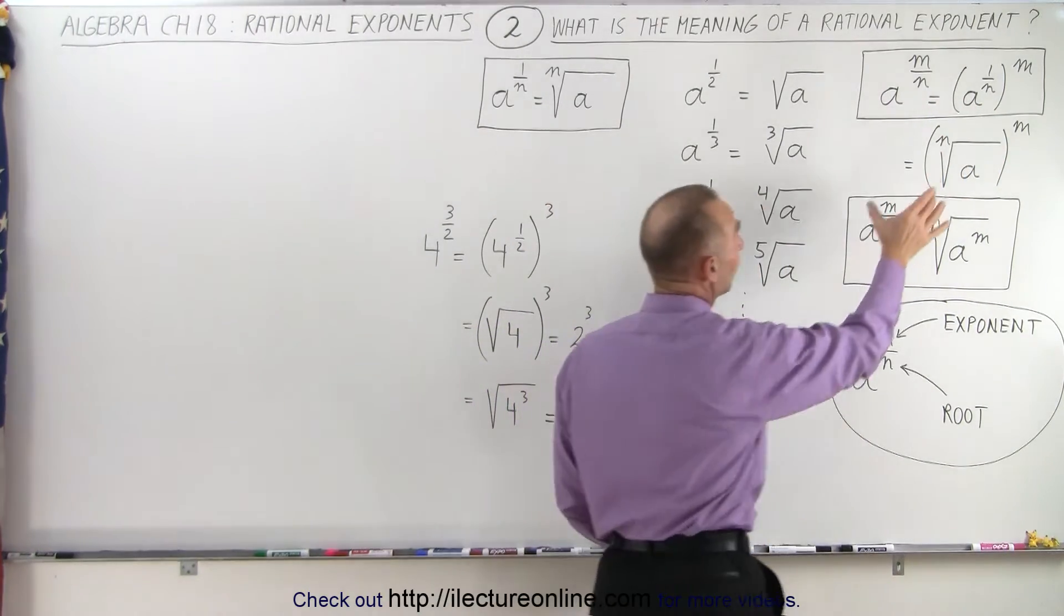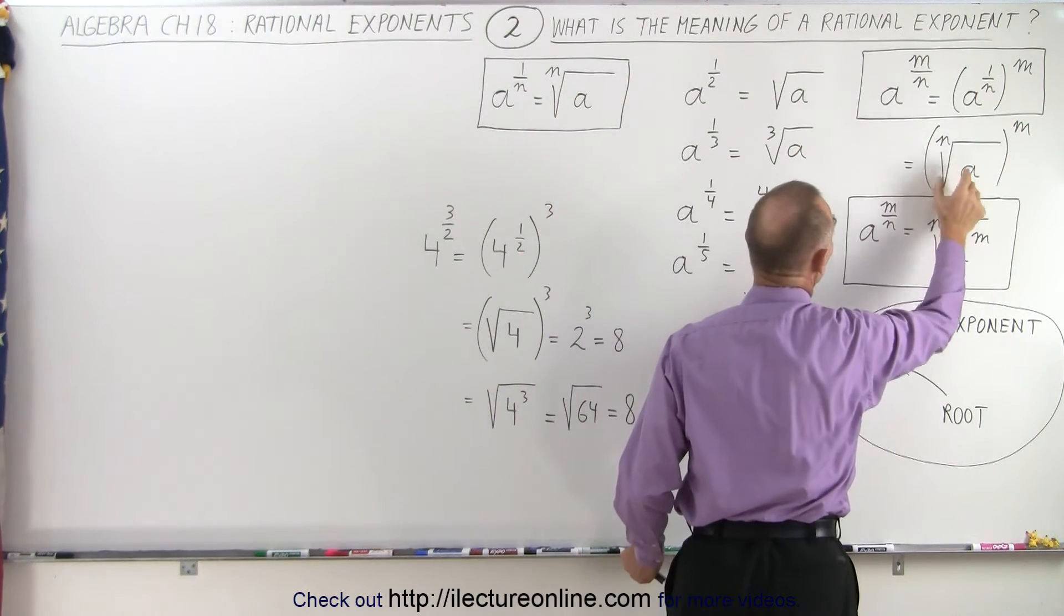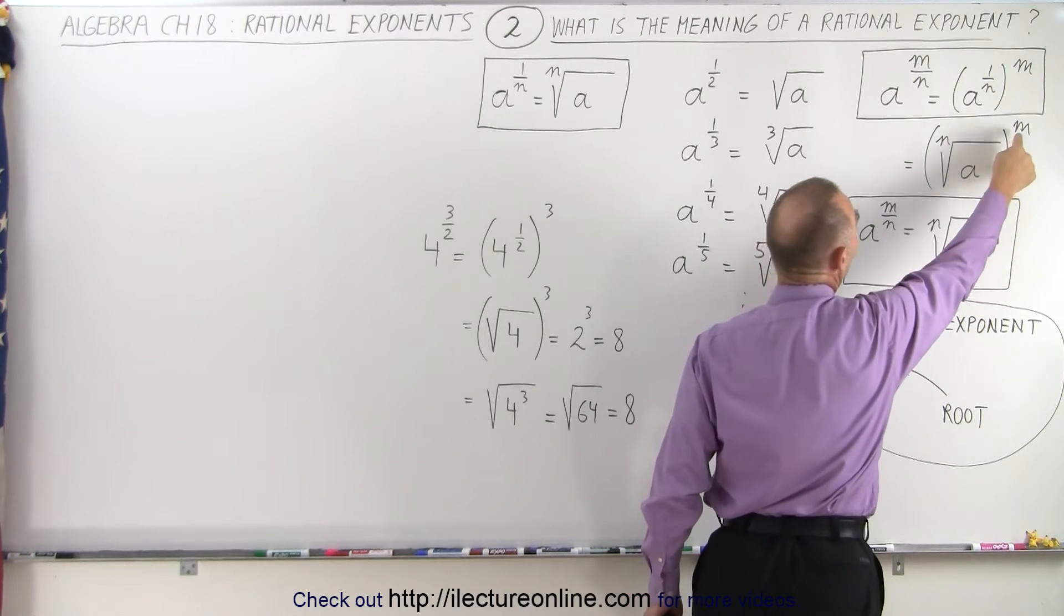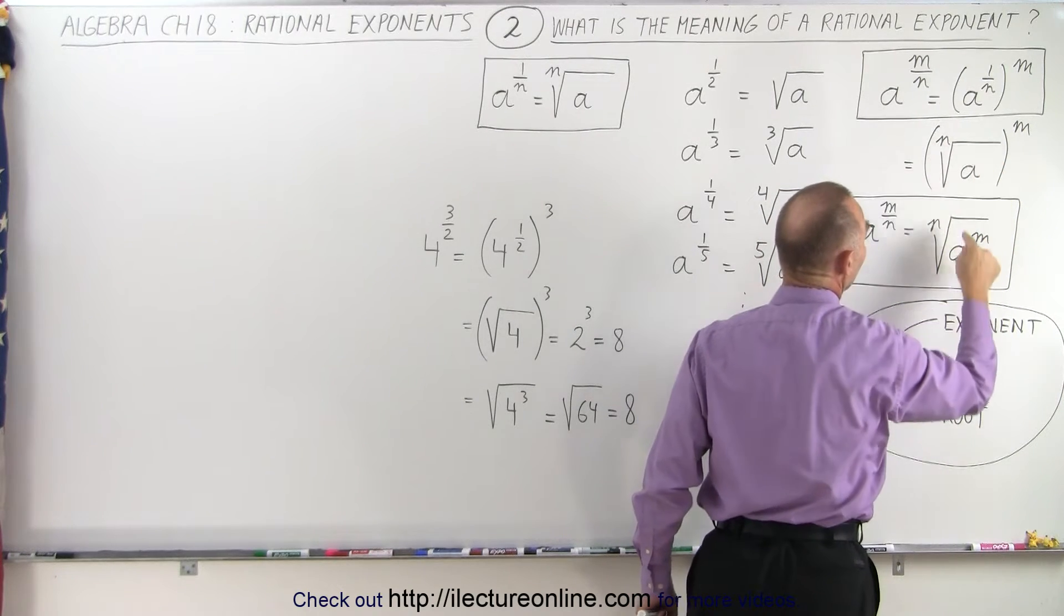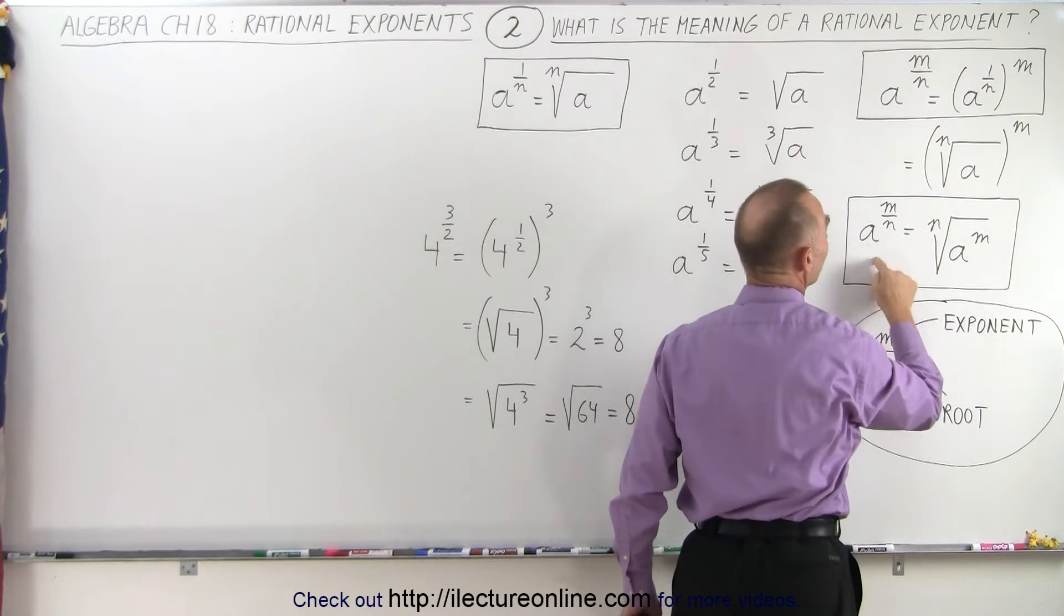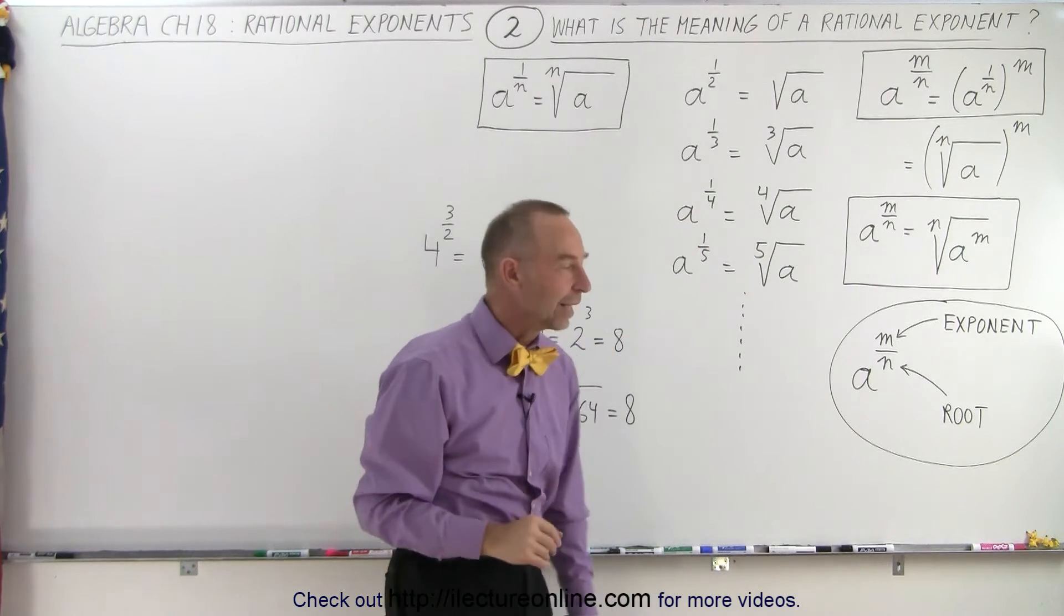And so therefore, if we take what's inside the parentheses, which we have over here, that means the nth root of a raised to the m power. And then it turns out we can also write that inside the radical as a to the m. And so essentially, a to the m over n can be written as the nth root of a to the m. And we'll see an example of that in just a moment.